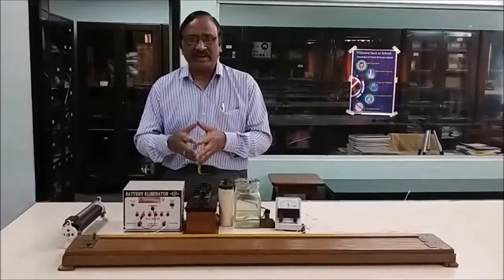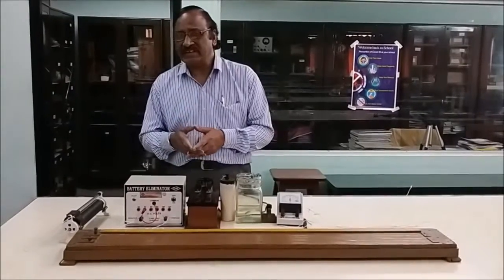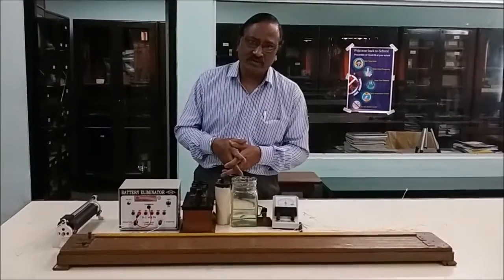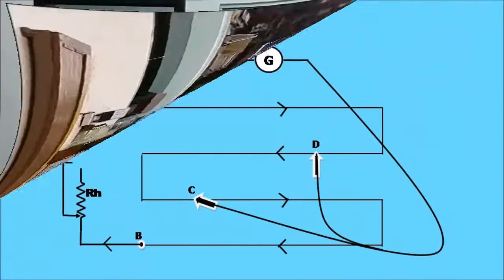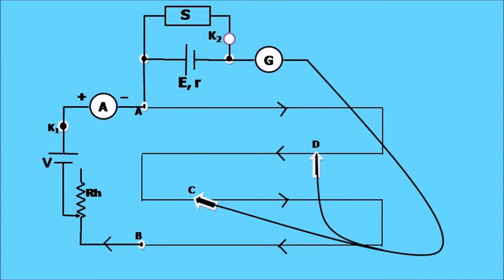Now I will explain the circuit diagram which is required to determine the internal resistance of a primary cell using a potentiometer. Here, AB represents a 400 cm long potentiometer wire. V is the power supply connected across the wire AB with key K1 and the rheostat. It provides the required potential gradient to the potentiometer wire AB.